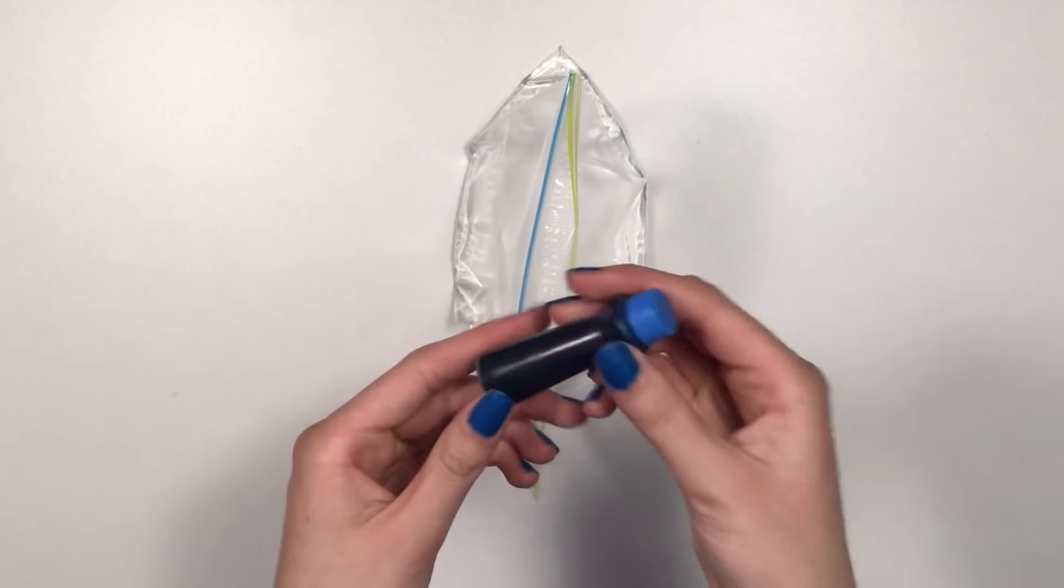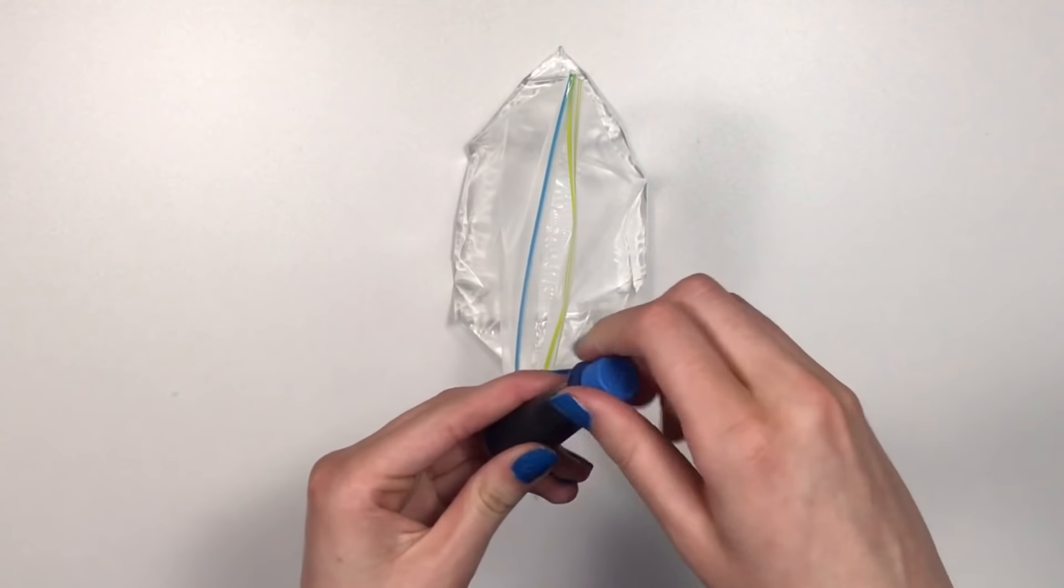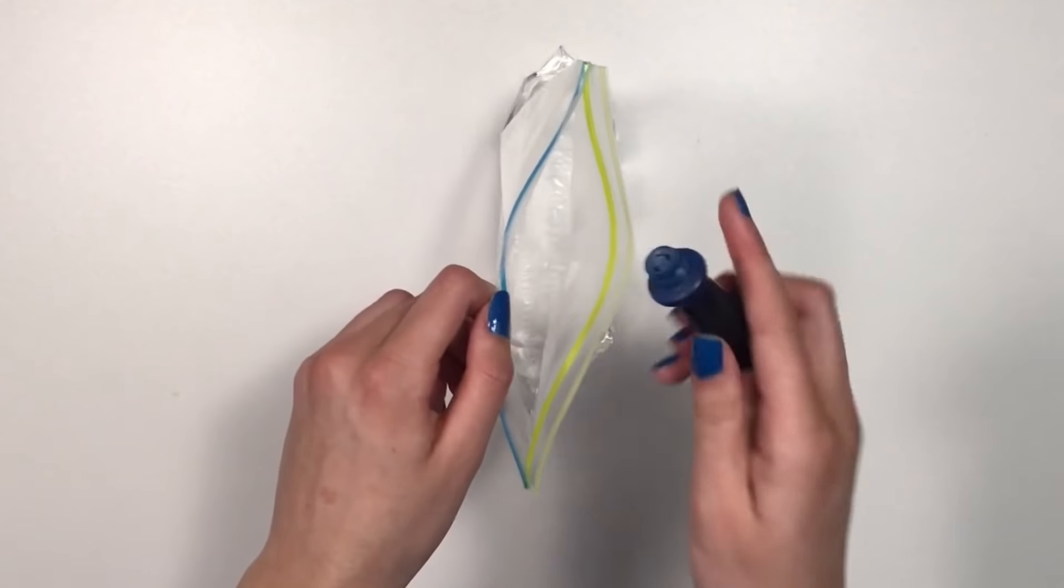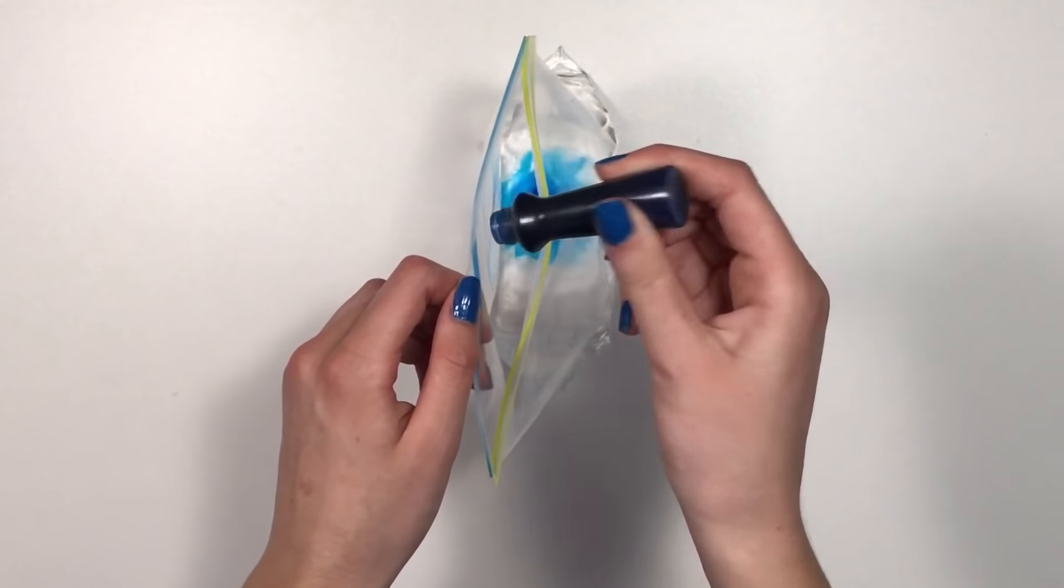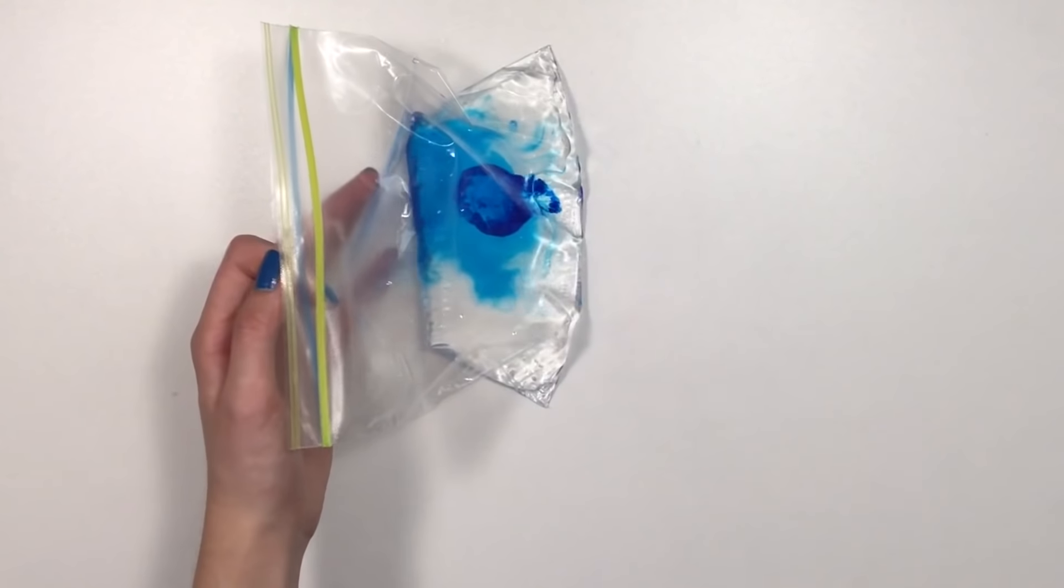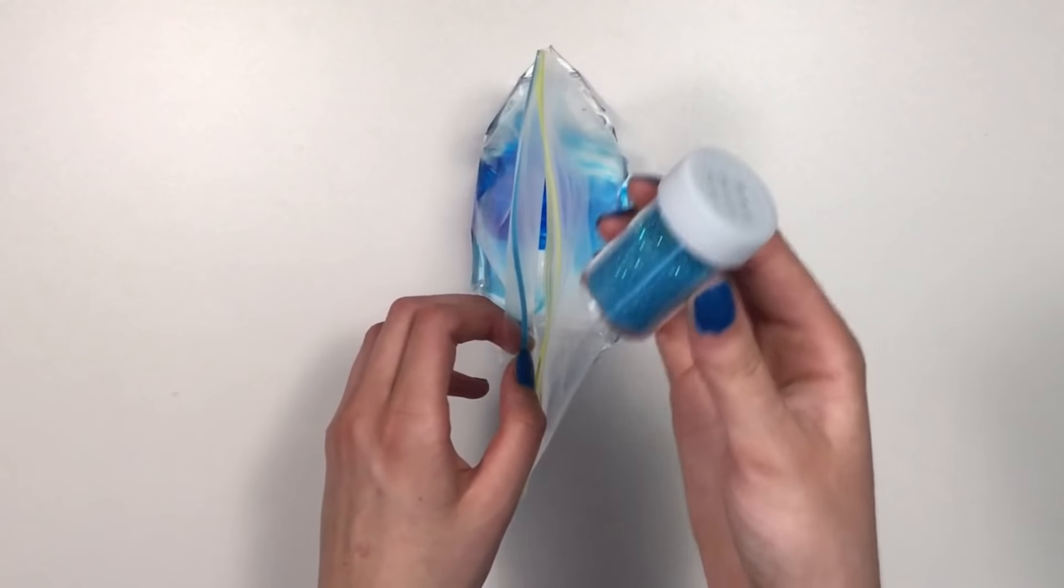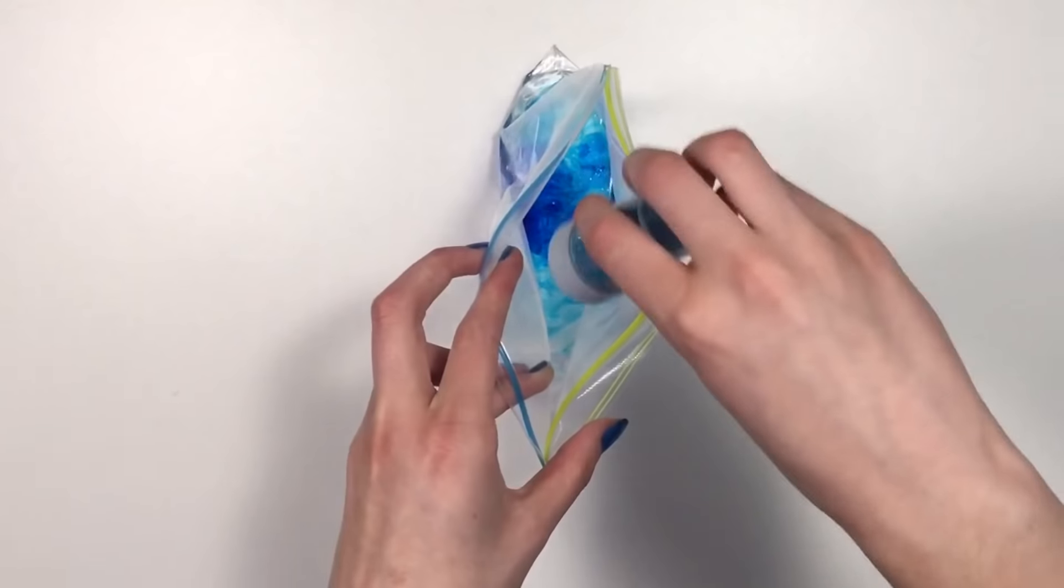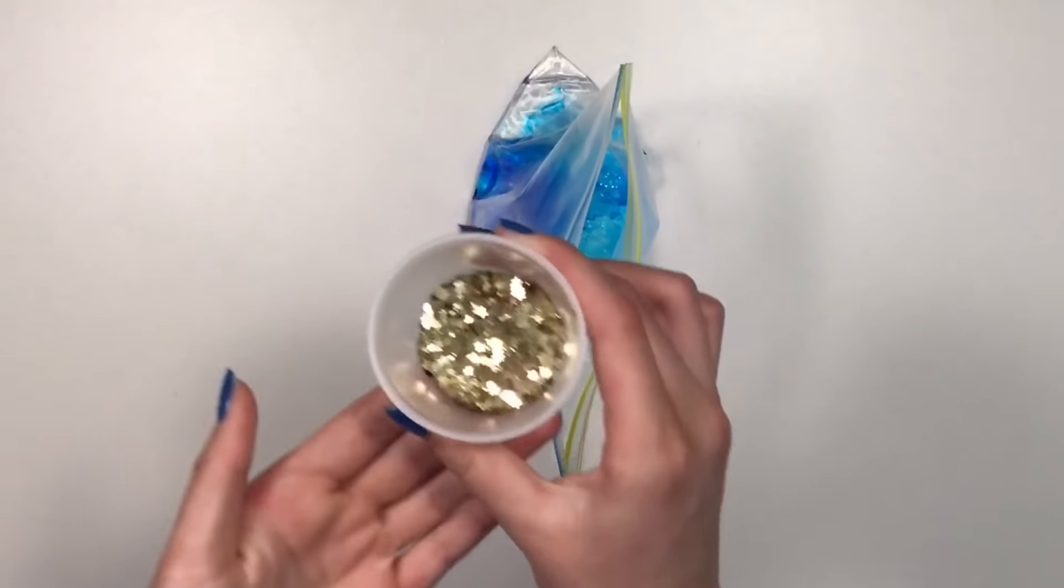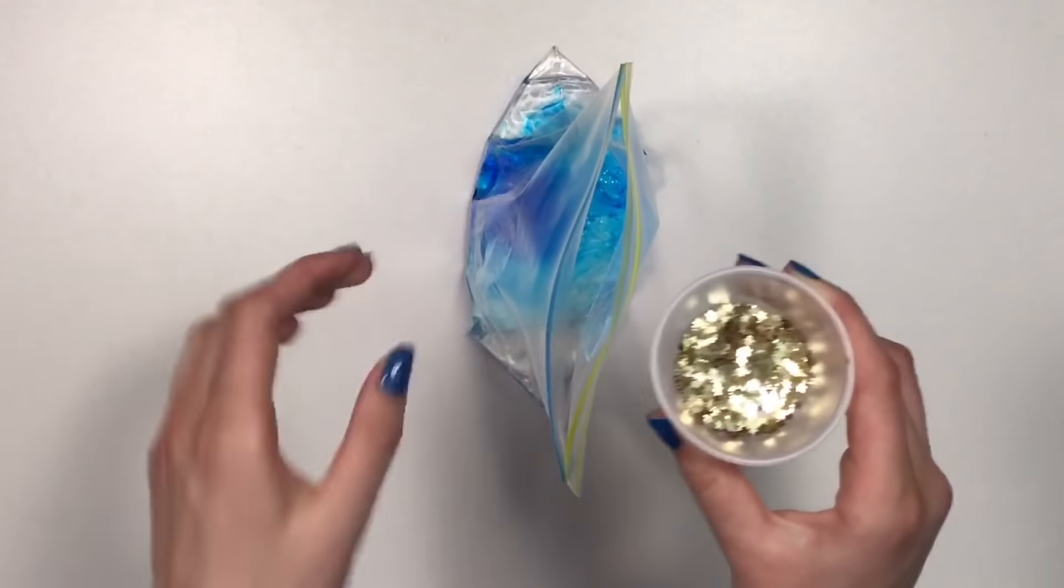Once you've got your water in the bag, grab some food coloring or paint. This is totally optional but I'd highly recommend it because it will make your water snake much more fun. I'm gonna add in just a drop. You guys, look how satisfying that looks. Then I have some beautiful blue glitter, I'm just gonna sprinkle some in.